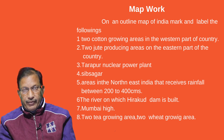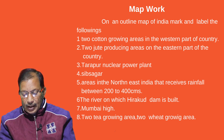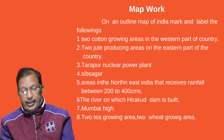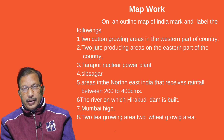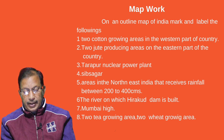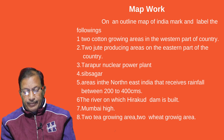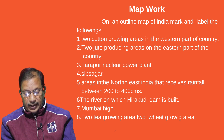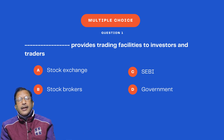On an outline map of India, mark and label the following: two cotton-growing areas in the western part of the country, two jute-producing areas in the eastern part of the country, the Tarapur Nuclear Power Plant, Sivasagar in Assam, areas in northeast India that receive rainfall between 200 to 400 centimeters, the river on which the Hirakud Dam is built, Mumbai High, two tea-growing areas, and two wheat-growing areas.